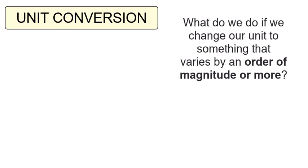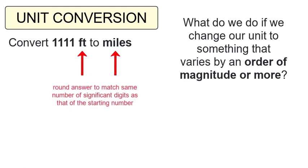What do we do if we change our unit to something that varies by an order of magnitude or more? Let's look at an example. Let's convert 1,111 feet to miles. Feet and miles do not have comparable magnitudes. We're going to round the answer to match the same number of significant digits as 1,111 feet, which is 4, so our answer should have 4 significant digits.